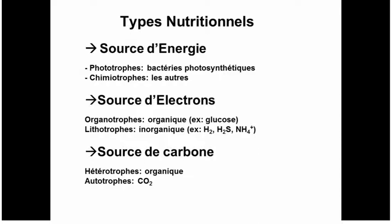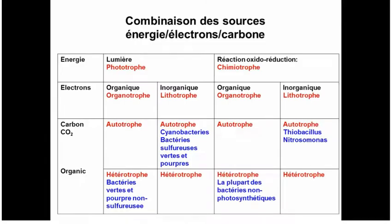I've tried to draw out the eight possibilities. We have phototrophs and chemotrophs, then organotrophs and lithotrophs for both categories, and then autotrophs and heterotrophs — giving eight categories. Photolithoautotrophs are photosynthetic bacteria that use an inorganic carbon source and a mineral as a source of electrons — for example cyanobacteria and purple and green sulfur bacteria. There are also photoorganoheterotrophic bacteria, which are photosynthetic but require organic carbon for their biosynthetic pathways and as a source of electrons.